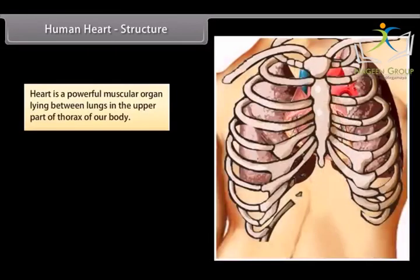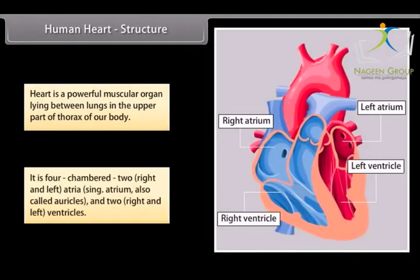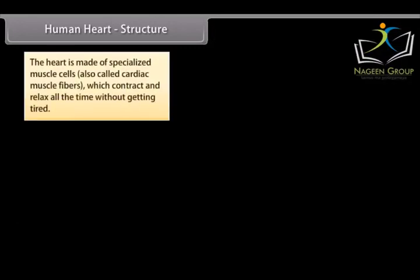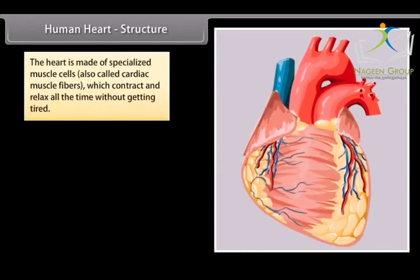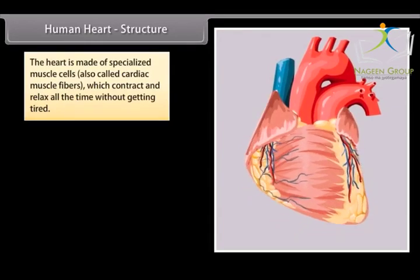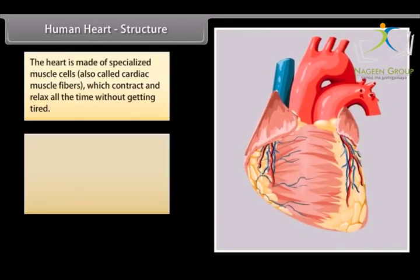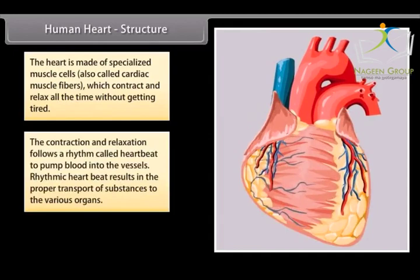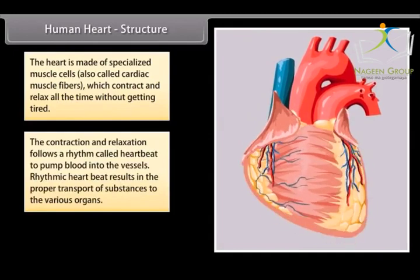Human Heart Structure: Heart is a powerful muscular organ lying between lungs in the upper part of thorax of our body. It is four chambered, two right and left atria (singular atrium), also called auricles, and two right and left ventricles. The heart is made of specialized muscle cells, also called cardiac muscle fibers, which contract and relax all the time without getting tired.